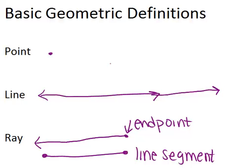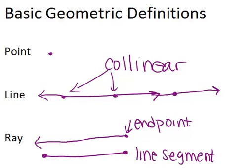Anytime you have a line that has points on it, those points are called collinear because they are on the same line. And the word collinear has this prefix co, which means same, and you see line in here, so they are on the same line. If I had another point over here, it would not be collinear with these first three points because it is not on the same line.